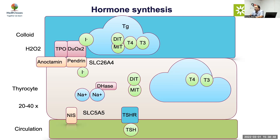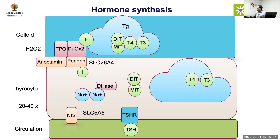T4 and T3 cannot easily exit the cell on their own. Just as transporters are needed to push them into cells, you need MCT8, MCT10, and other transporters to push them out of the thyroid cell into the circulation.